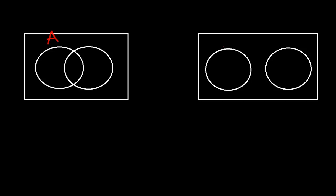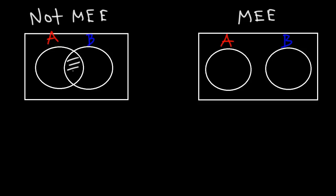Let's illustrate the concept of mutually exclusive events using Venn diagrams. We have event A and event B. Which Venn diagram represents mutually exclusive events — the one on the left or the one on the right? We know that mutually exclusive events do not share any outcomes. So the one on the right represents mutually exclusive events. The one on the left does not, because those events share something in common.